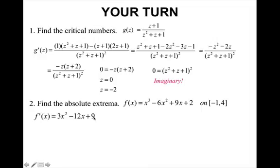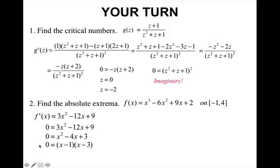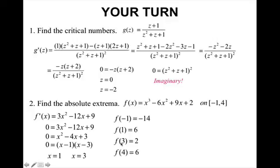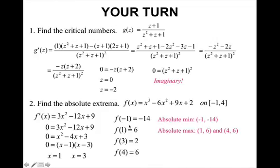For number 2, find the absolute extrema. Find the derivative, set it equal to 0. Since it's a polynomial, it's continuous everywhere — it has no places where the derivative does not exist — so I only find where it equals 0. Factor out a 3 and factor to get x equals 1 and x equals 3. To find absolute extrema, check the endpoints plus the critical numbers. Plugging all four x values into the original function gives y-values, and I find the absolute min at (negative 1, negative 14) and the absolute max at both (1, 6) and (4, 6).